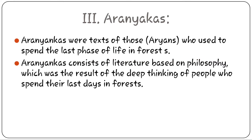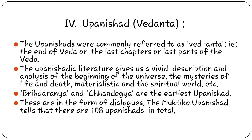Third is the Aryankas. Aryankas are the texts of Aryans who used to spend the last phase of life in the forest. It consists of literature based on philosophy, which was the result of the deep thinking of people who spent their last years in the forest. Fourth is Upanishad or Vedanta — commonly known as Vedanta, meaning the end of the Veda or the last part. It gives a clear analysis of the beginning of the universe, mysteries of life and death, and the materialistic and spiritual world. The earliest Upanishads are Brihadaranyaka and Chandogya, all in the form of dialogue.